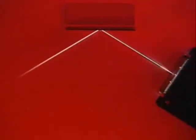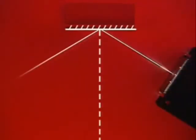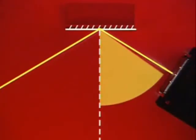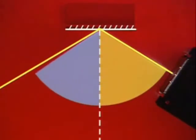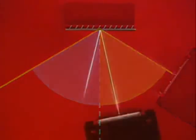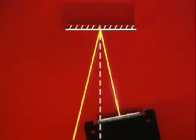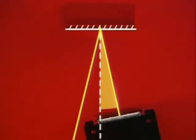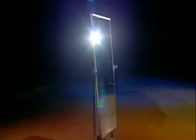So what happens when the beam is moved? For each ray of light the angles of incidence and reflection are always the same size. Light doesn't bounce off the mirror at just any old angle, which is why the dancer's reflection isn't always visible.